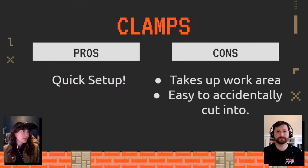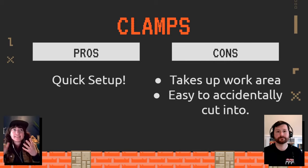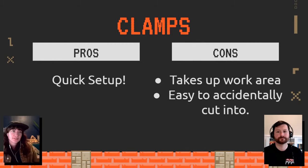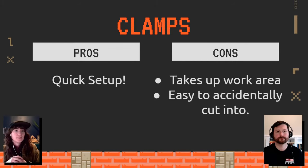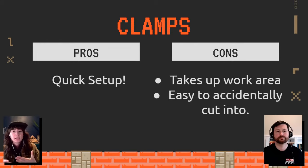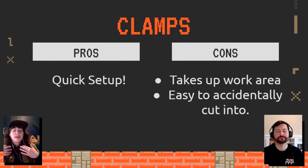Quick pros and cons of using clamps: it's a really quick setup, but it isn't a very good long-term solution. If you want to leave your temporary spoil board set up for a week, this is more of an afternoon-type operation. The clamps also take up work area — as you saw, we cut through them. An alternative is double-sided tape, which can be a very strong adhesive and can last you a short period of time while you're still working on your final spoil board design.